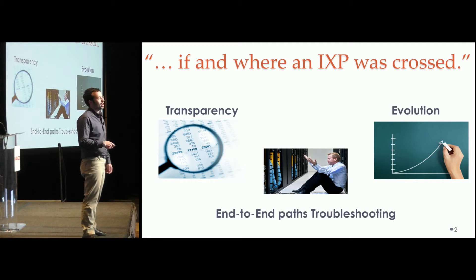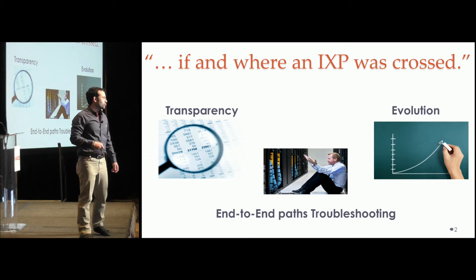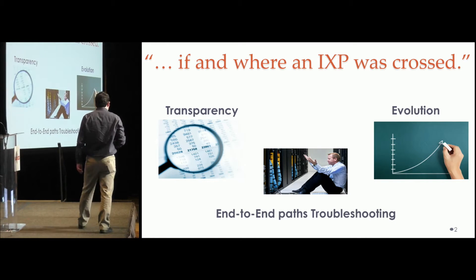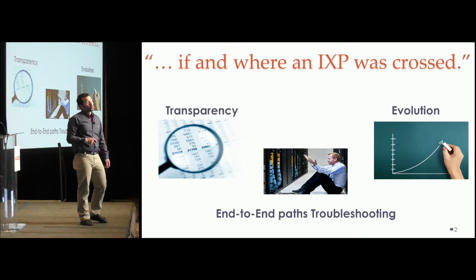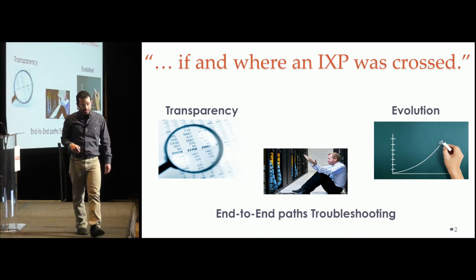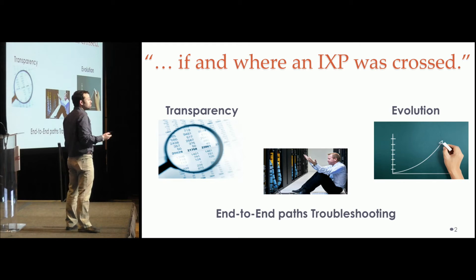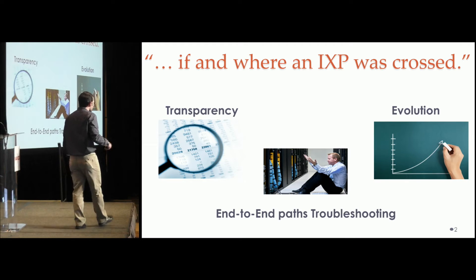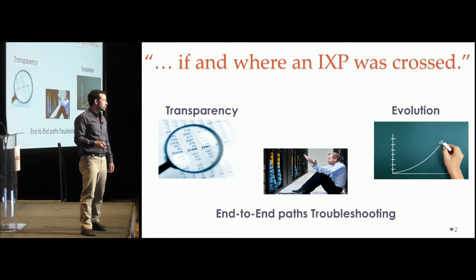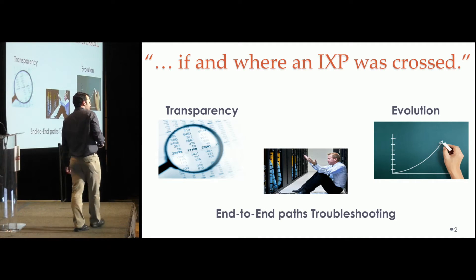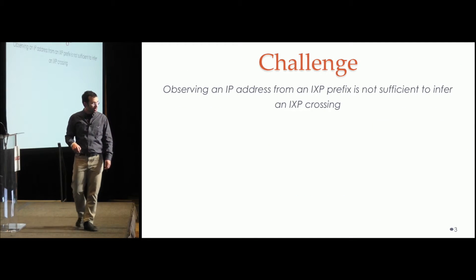Let me ask you something. How many of you use Traceroute? Please raise your hand. Let me ask you something else: why is it important to know if Traceroute paths cross an IXP, or why it is important to know, in general, if our traffic goes through an internet exchange point? A potential answer is that it offers much more transparency over where our packets go, and it might be quite useful for networking administrators to troubleshoot end-to-end paths, or for researchers to better understand how the IXP ecosystem evolves.